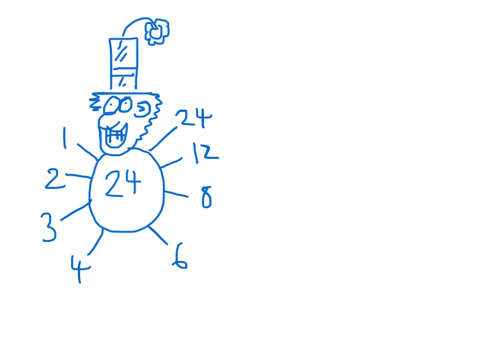Does 24 divide by 5? No, it doesn't. So then we reach 6, and now because we've already used 6 as a factor, there's no point in going any further. We know we've got all our factors of 24 covered.